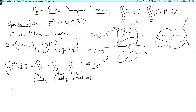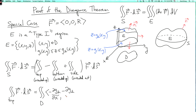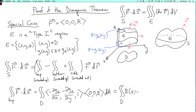The double integral over the top of F dot dS, by the formula for the surface integral over a graph, is the double integral over D of (-∂g2/∂x, -∂g2/∂y, 1) dotted with our vector field (0, 0, R) dA. Because the vector field has no x or y component, this simplifies to just the double integral over D of R evaluated at (x, y, g2(x,y)) dA.